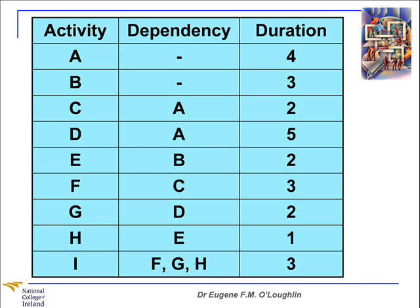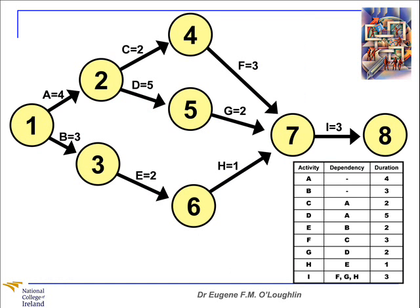So straight away, I can see that my diagram is going to have some bursts and merges on it. The clue to this is that in the dependency column, you can see activity A listed twice, and down at the bottom, activities F, G, and H all lead into activity I. So I know before I draw my diagram that I'm going to require bursts and merges. On this picture here, in the bottom right-hand corner, I have a small version of the table with the activities, dependencies, and durations listed. So hopefully you can see those in the table.